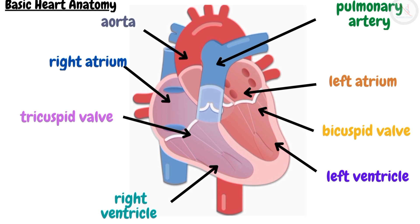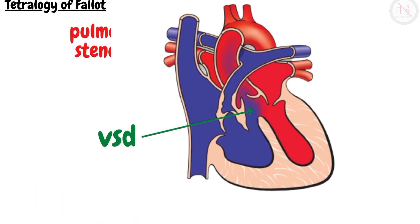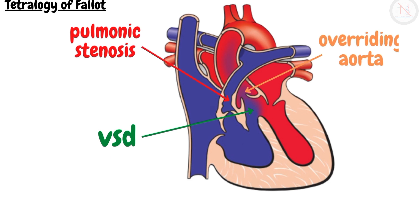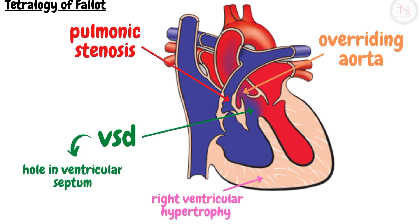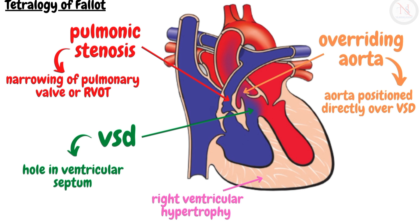In tetralogy of Fallot, there are classically four defects: ventricular septal defect, pulmonic stenosis, overriding aorta, and right ventricular hypertrophy. VSD means a hole in the ventricular septum. Pulmonic stenosis means narrowing of the pulmonary valve or right ventricular outflow tract. Overriding aorta means the aorta is positioned directly over the ventricular septal defect. Right ventricular hypertrophy means thickening of the wall of the right ventricle.